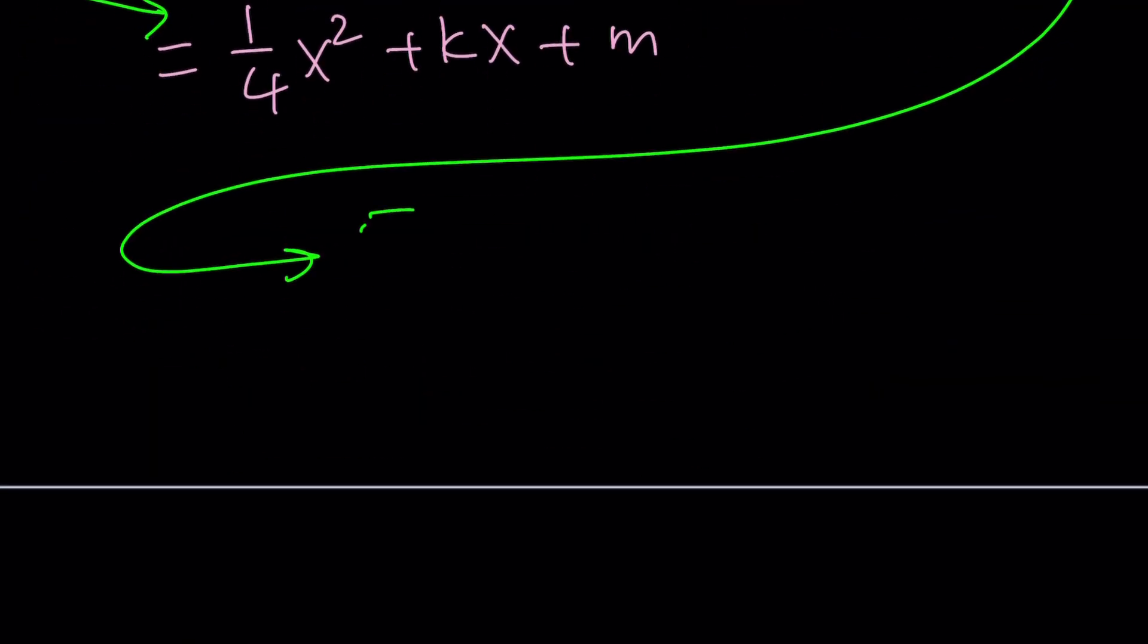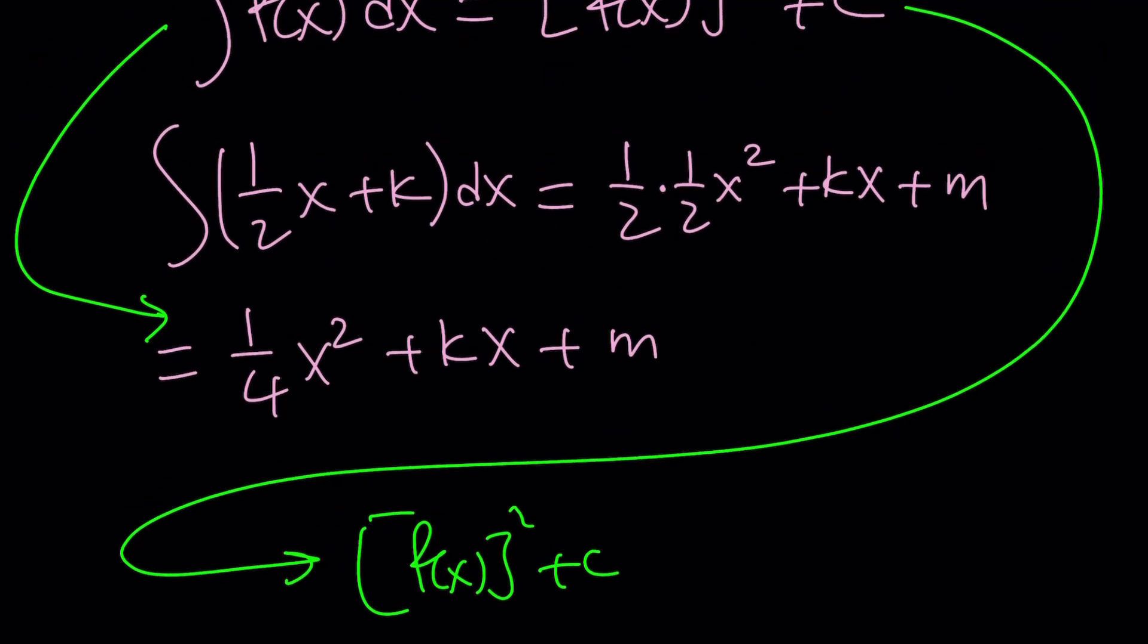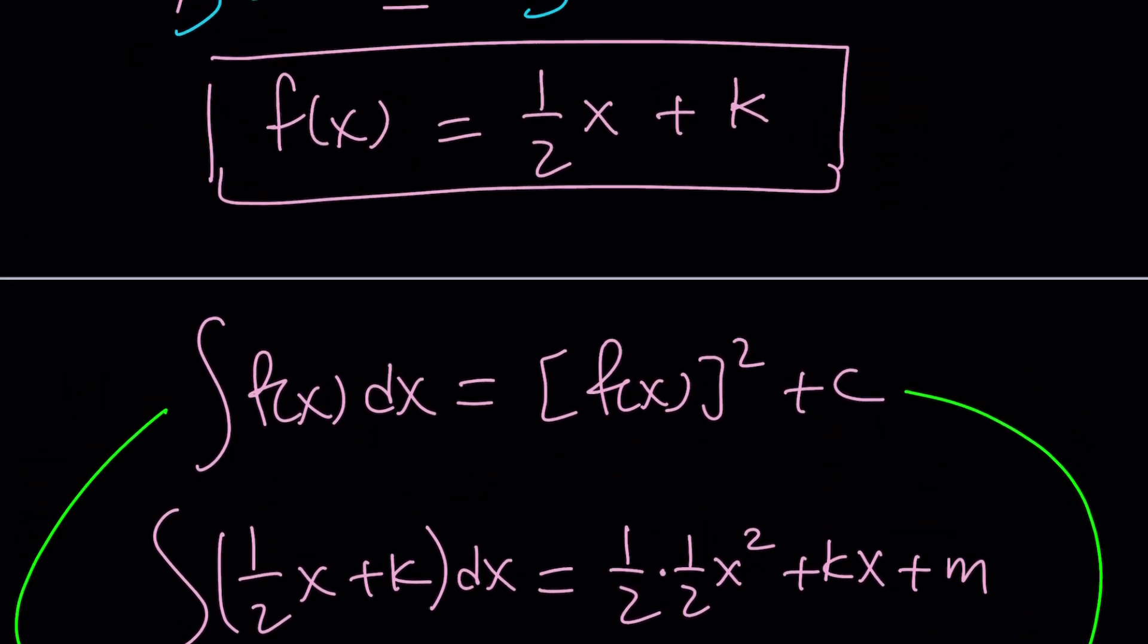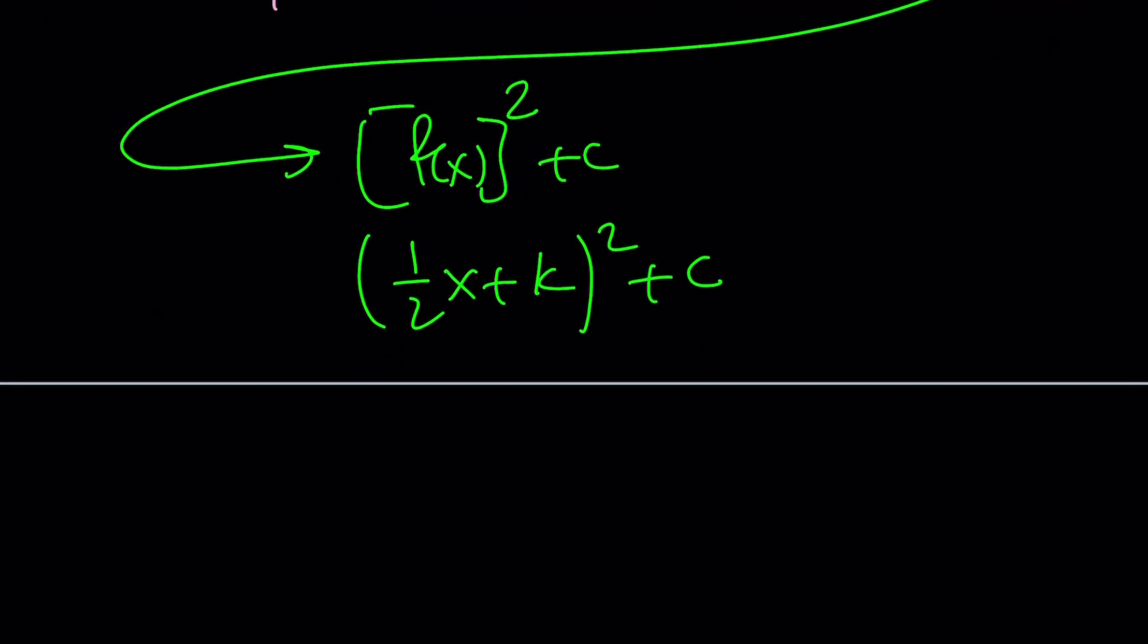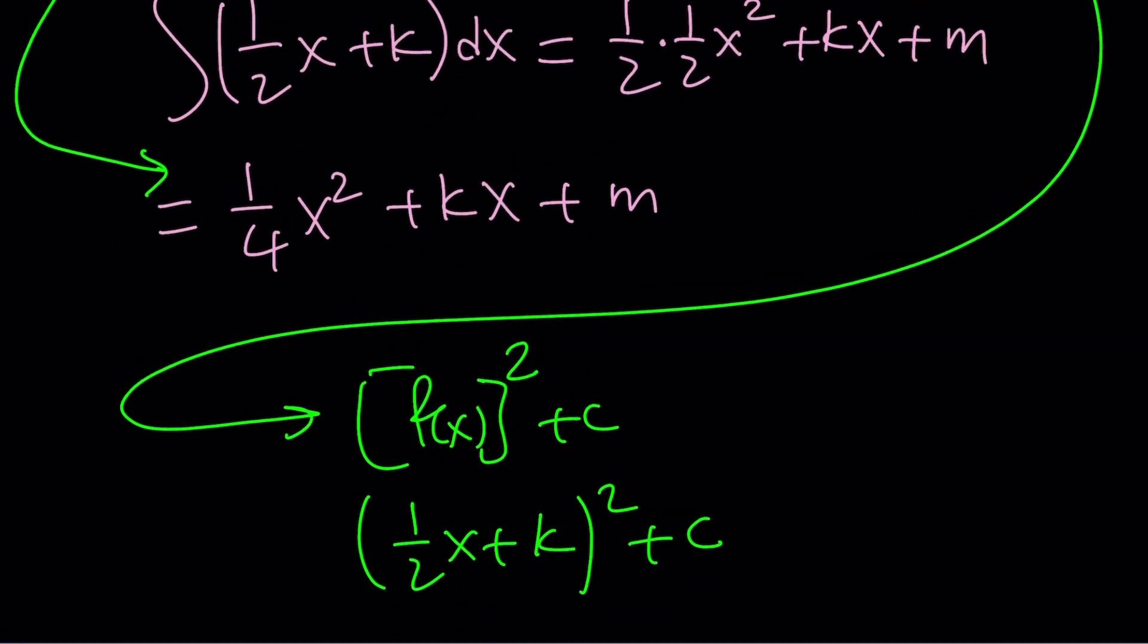f(x) squared plus c. So my solution said f(x) is 1 half of x plus k. 1 half of x plus k squared plus c. If you square this, 1 fourth of x squared plus, if you multiply these and double the result, you're going to get kx plus k squared plus c.